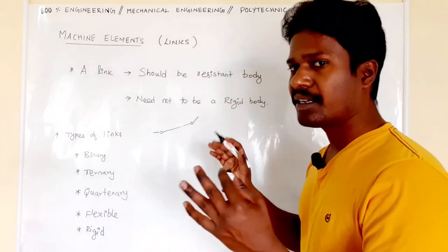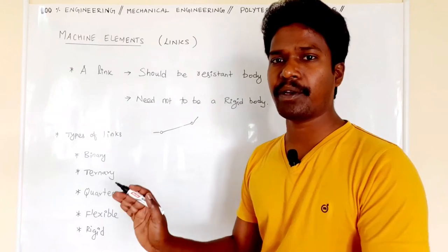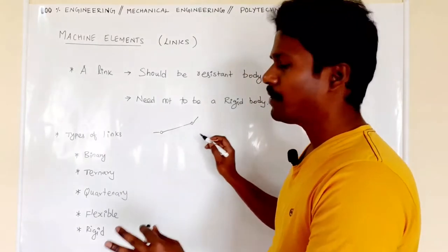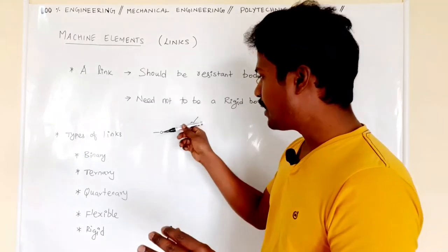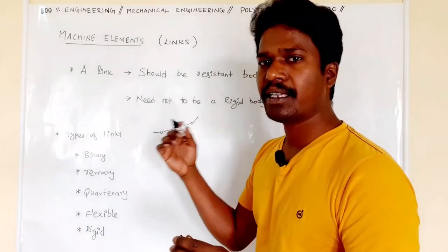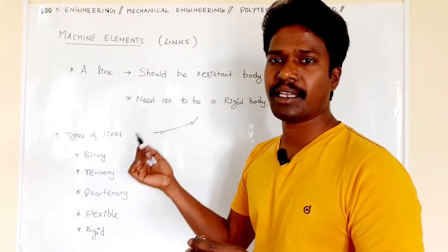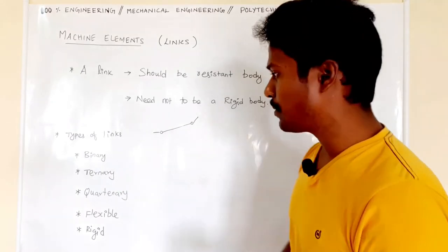Two other links can be attached. So that kind of link is called a binary link, meaning on the link we can join two machine elements.